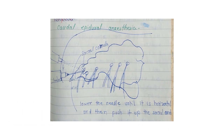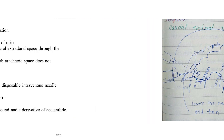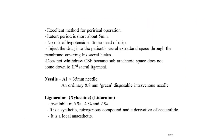Now, caudal epidural anesthesia. The diagram on screen shows the sacral cannula — lower the needle until it is horizontal and then push it up the sacral canal. This is an excellent method for perineal operations. The latent period is short, about 5 minutes, and there is no risk of hypotension, so no need for a drip.